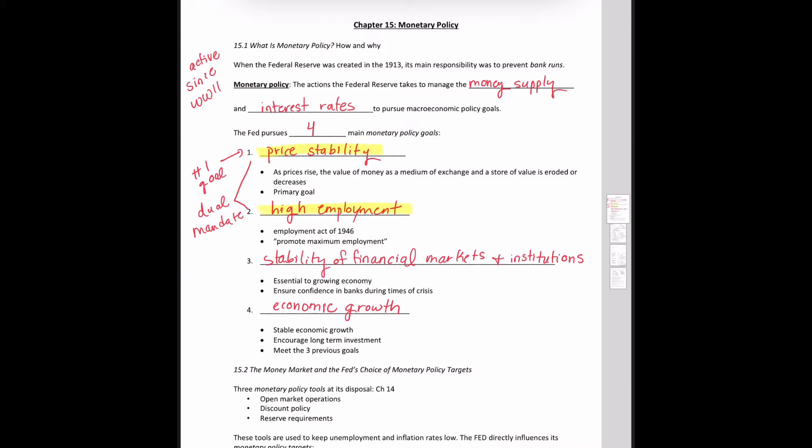Federal Reserve goal number three is stability of financial markets and institutions. These are essential. The Fed makes funds available to banks during times of crisis — for example, COVID — in order to ensure confidence in the banks. This also occurred in 2018 when discount loans became available to investment banks to ease liquidity problems.